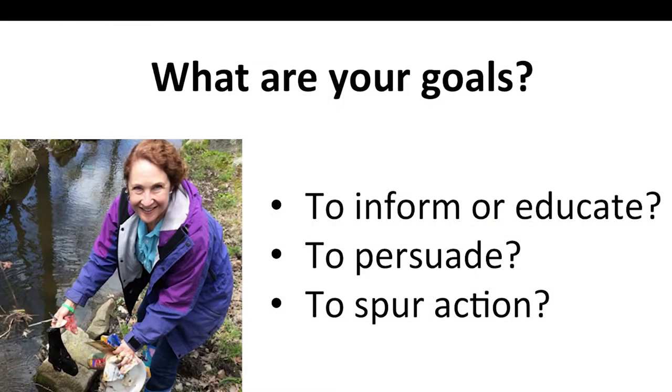Once you have really figured out who your audience is, then you need to take the next step of asking: what exactly am I trying to achieve in my communication with that audience? Do I want to inform them within the context of engagement? Do I want to persuade them to practice a particular type of behavior or to support a policy? Do I want to spur them to action? You need to be really clear on exactly what it is you're trying to achieve with that engagement.